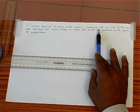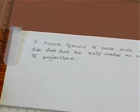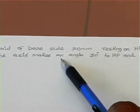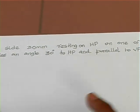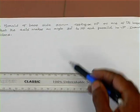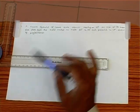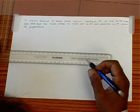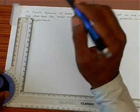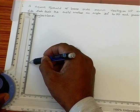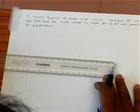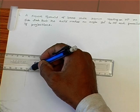A square pyramid of base side 30mm resting on HP on one of its base sides such that the axis makes an angle of 30 degrees to the HP and parallel to VP. Draw its projections. In this problem it is given resting on HP, so we draw the top view first. Top view is a simple square of 30mm base side. So we take a point from there, we measure 30mm. The square can be drawn, square of 30mm as top view.